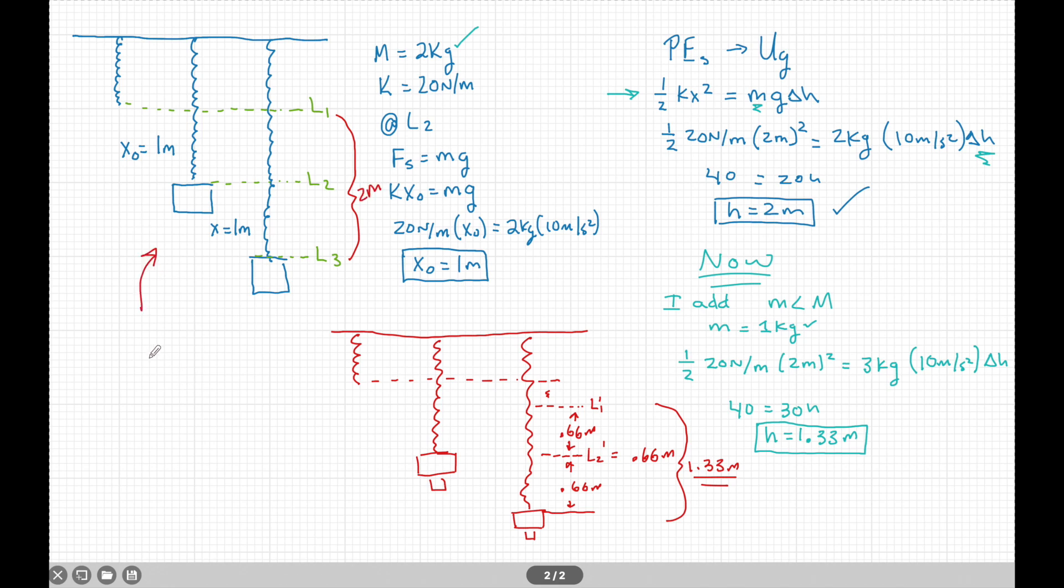So for condition A, the first condition, the A was equal to 1 meter. And the range of oscillation was equal to 2 meters. But now here, the amplitude is equal to 0.66 meters. And the range of oscillation is equal to 1.33 meters. So this is how we use energy to prove that.